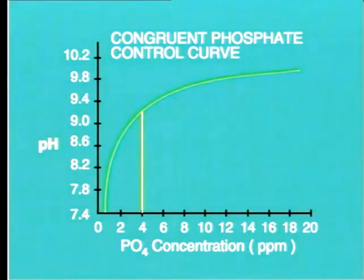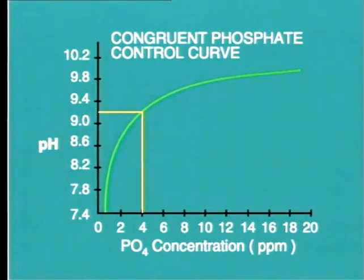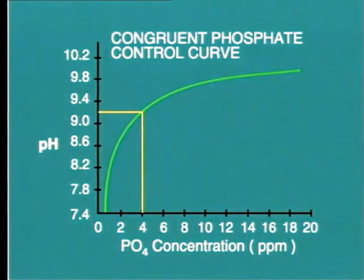For example, for a phosphate concentration of 4 ppm, the maximum allowable pH is indicated at 9.2. pH values above this level may lead to caustic attack at certain locations in the boiler.